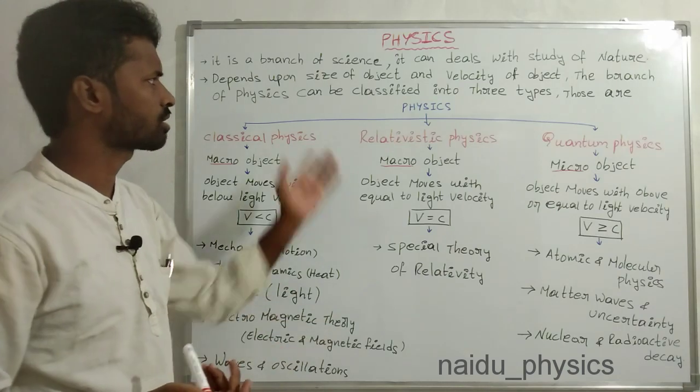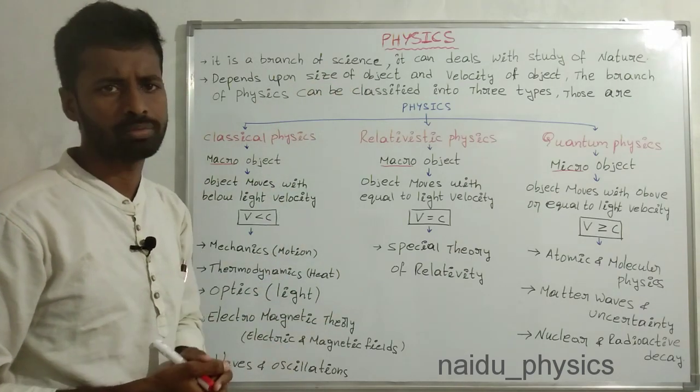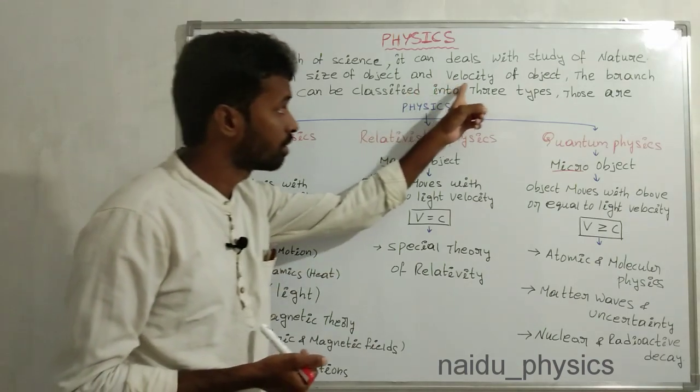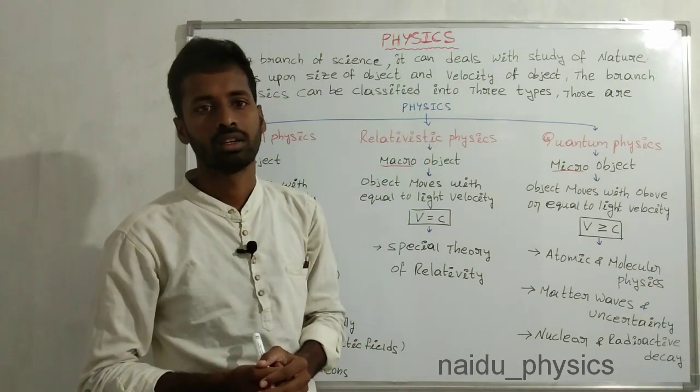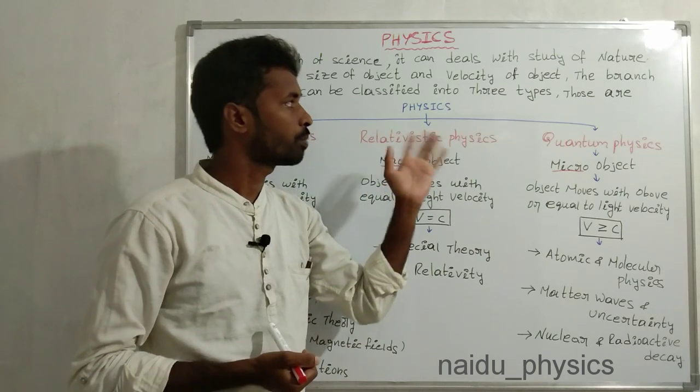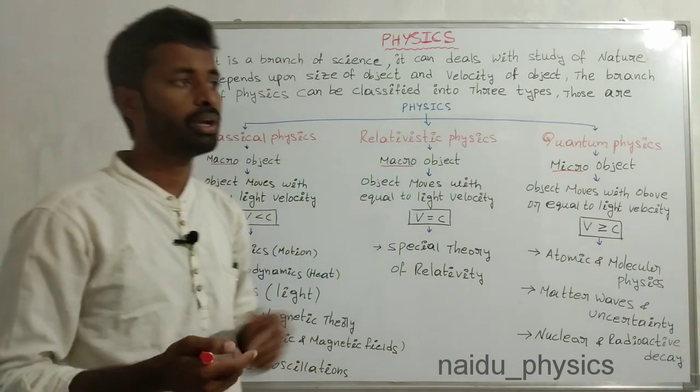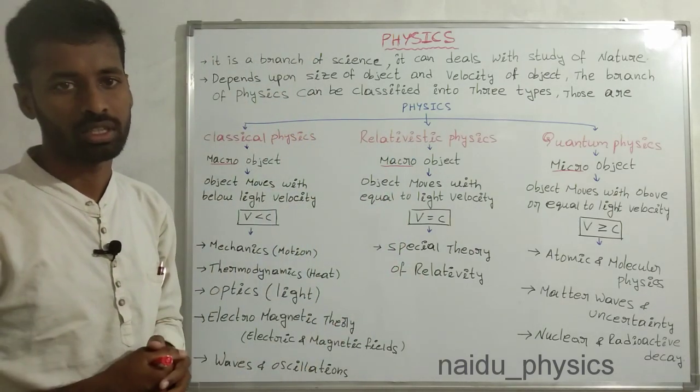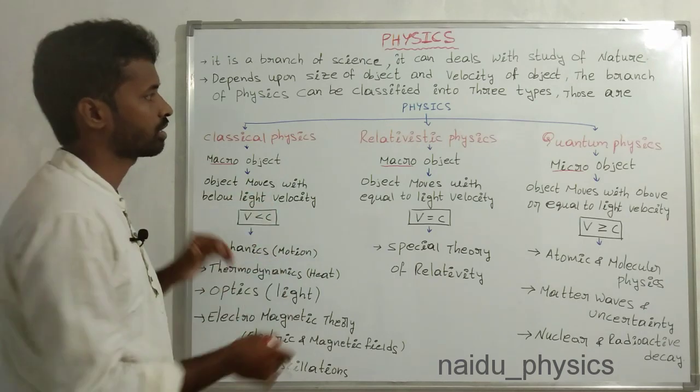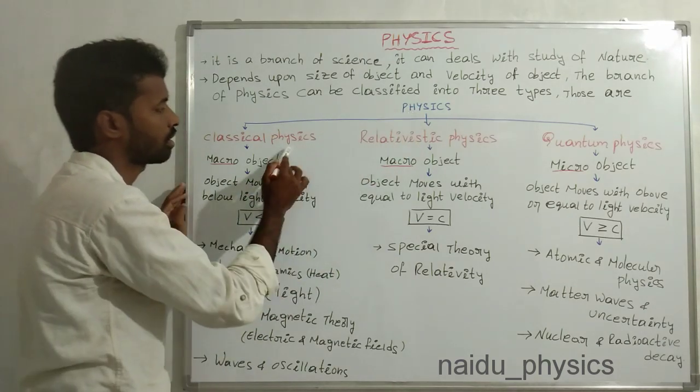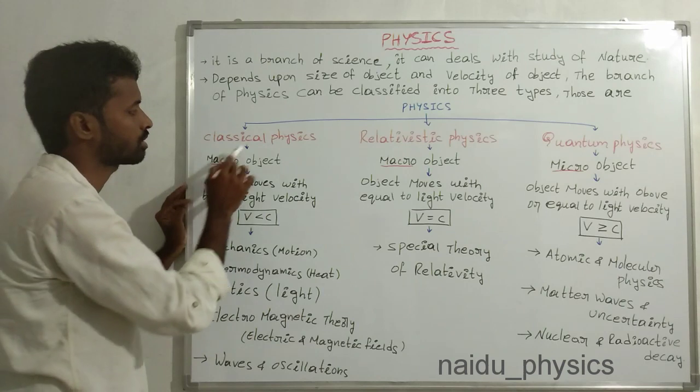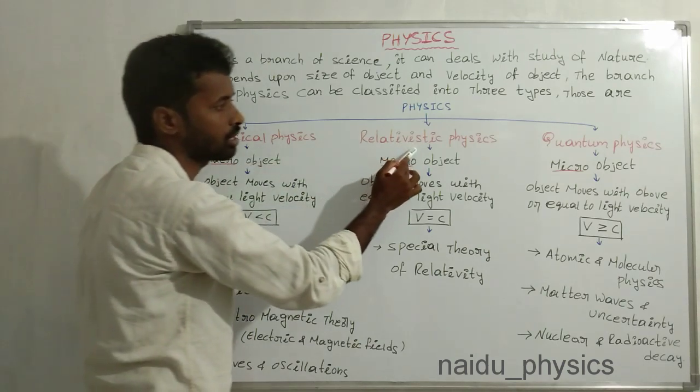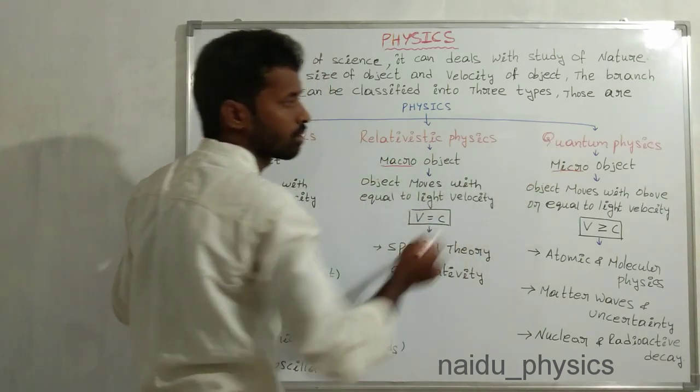All seeing objects are called macro objects. Another factor is velocity. Velocity of the object is compared to light velocity. Depends upon these two factors, our physics can be classified into three types: one is classical physics, another one is relativistic physics, and another one is quantum physics.